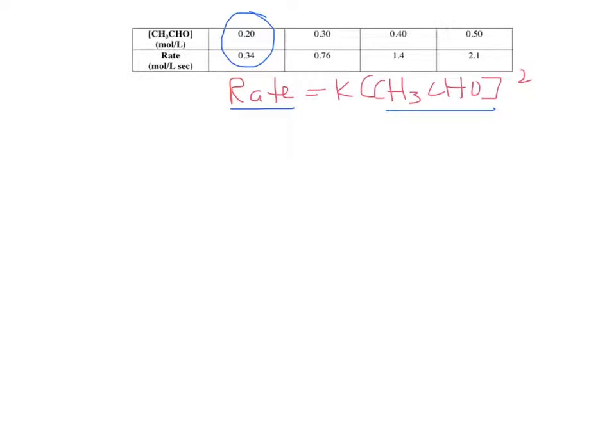I can use any of these sets of data. I'm just going to pick the first one because it's first. So I plug in for rate, that's 0.34 equals K times the concentration, 0.2 squared. So if I take 0.34 and divide it by 0.2 squared, I believe I get 8.5.